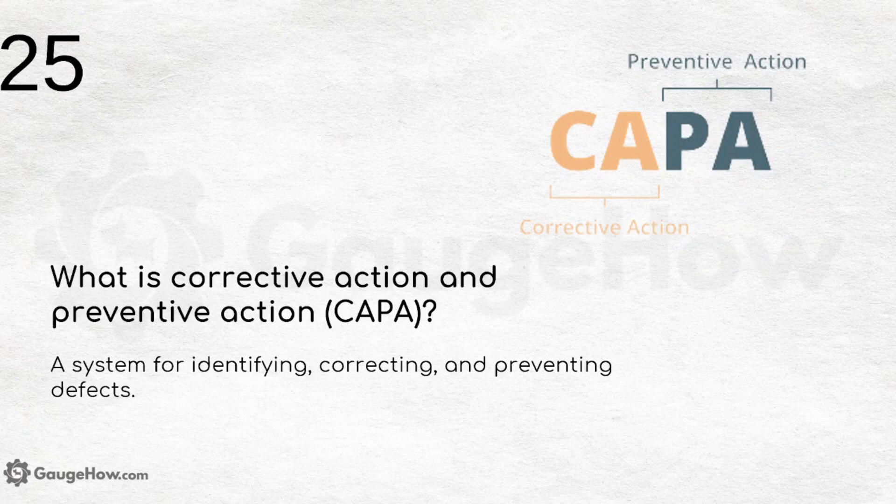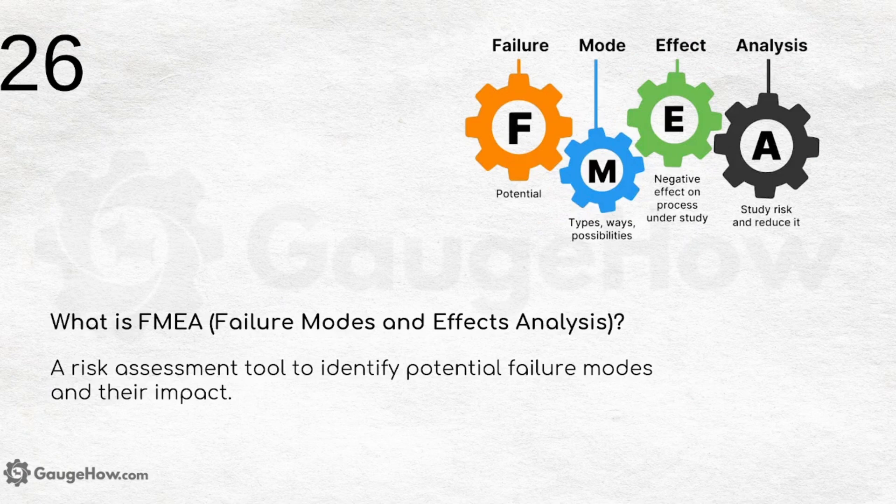What is corrective action and preventive action (CAPA)? CA stands for corrective action while PA stands for preventive action. Together, CAPA is a system for identifying, correcting, and preventing defects.